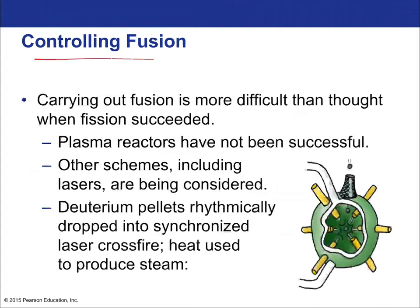Controlling fusion has proven far more difficult than anticipated after fission succeeded. In the 1970s, fusion was thought to be around the corner, but 50 years later there are still no commercial fusion power plants. Plasma reactors have not been successful; laser-based schemes are being explored, and experimental fusion is being done at facilities like Livermore, California. However, current experiments don't yet produce enough energy to be commercially viable, though we may be close to building the first viable reactors in the next decade or so.